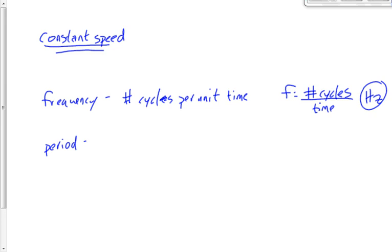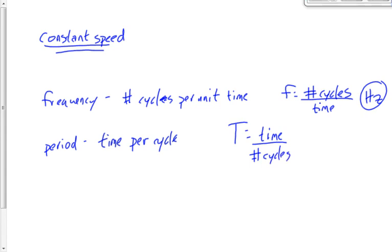Period is the exact opposite of frequency. If frequency is the number of cycles per unit time, then the period is the time per cycle — or, in the context of circular motion, the time per revolution. It's given the symbol big T. Little t is a general time; big T is the time specifically for one revolution. T equals the total time divided by the number of cycles. The units for period are seconds.